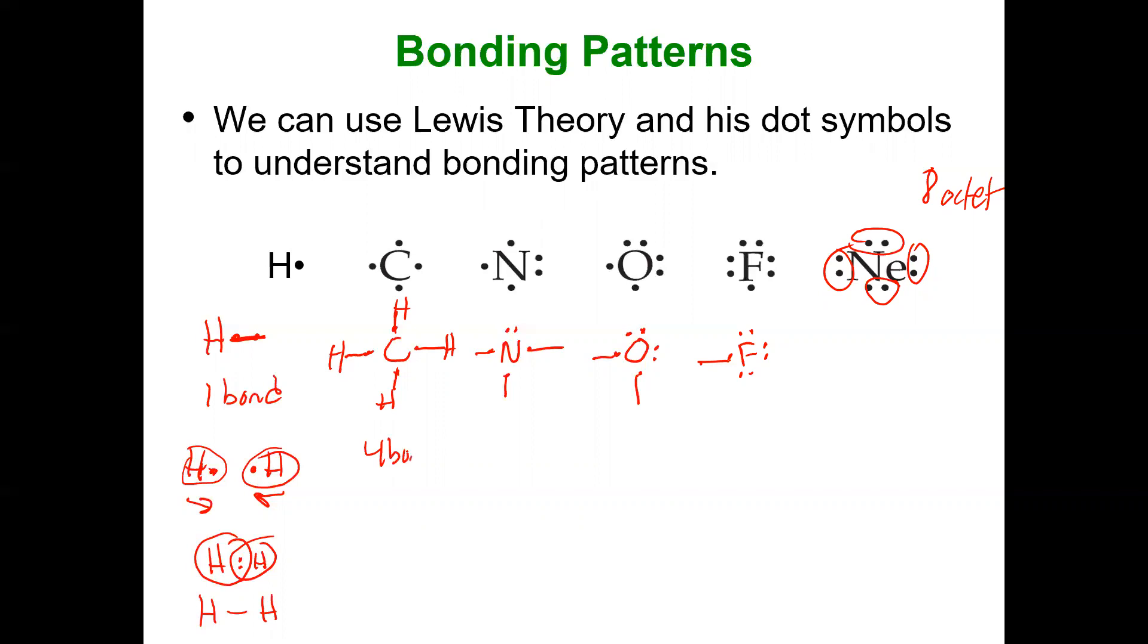Now, just because it has four bonds doesn't mean they have to all be single. Carbon can form two double. It can form a triple and a single. Or it could form a double and two single. But that still results in four bonds.